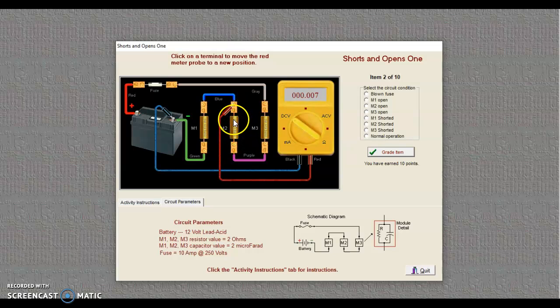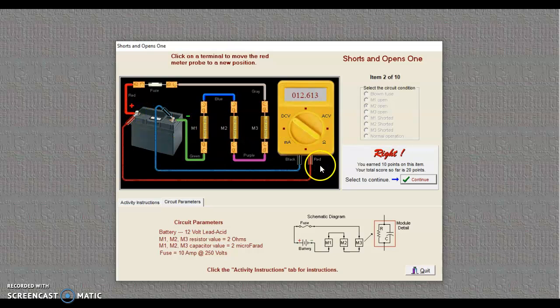All of my source voltage is right here at this open. So M2, in this case, is open. So we're going to come over here and say M2 is open. Grade that item. Hey, I'm good. Now before I hit continue, return my probe to the positive. Hit continue.